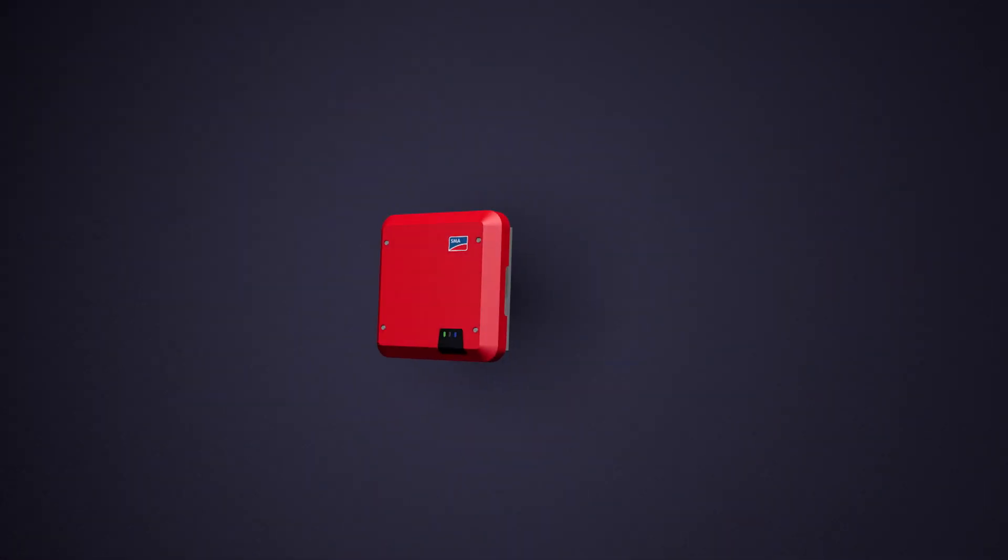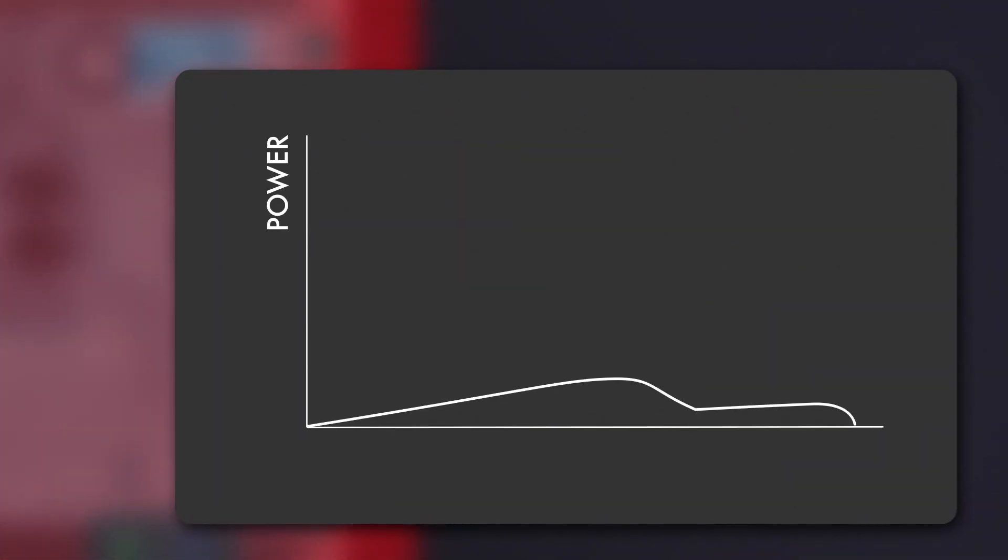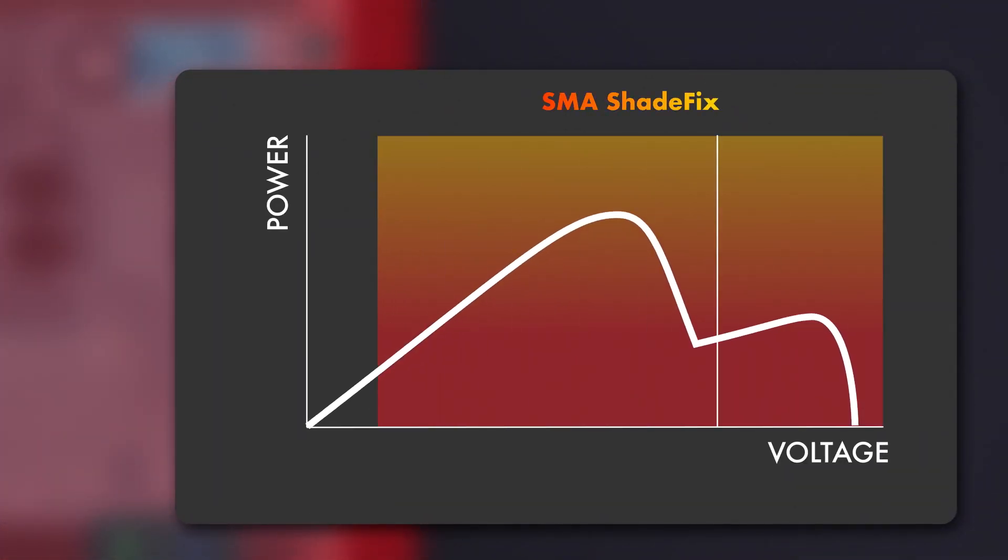How does SMA ShadeFix operate? SMA ShadeFix scans the power curve of the PV system at regular intervals, within milliseconds, for the highest possible performance peaks, and ensures that the inverter always finds the global maximum powerpoint. The speed and accuracy of SMA's tracking algorithm is unmatched, reducing energy losses due to shading to an absolute minimum.